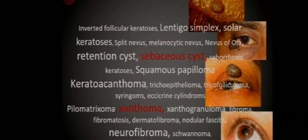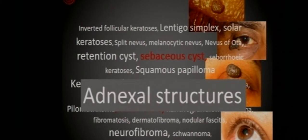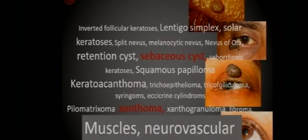Eyelid tumors have a huge classification system. There are a lot of different structures in the eyelid and tumors can practically arise from any of these layers. We see most of them in our practice. Many of them are benign lesions but there can be some which are actually malignant. They can be epidermal, stromal lesions from the adnexal structures, and also from the muscles and neurovascular structures of the eyelid.